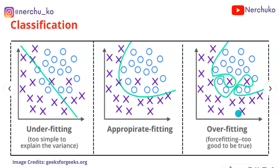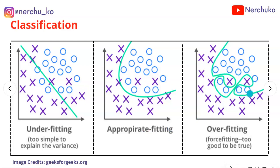Now we will look at the classification case with two classes. In the first image, the actual data is non-linearly separable, but we separate it with a straight line — high bias, underfitting. In the second image, we separate the two classes with a non-linear boundary — appropriate fitting. In the third image, we overfit the boundary — overfitting — high variance, low bias.